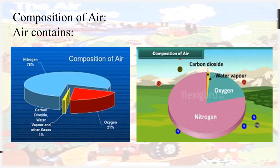The next topic is composition of air. What does air contain? Air contains various gases: nitrogen at 78%, oxygen at 21%, and the remaining 1% consists of carbon dioxide, water vapor, and other gases.